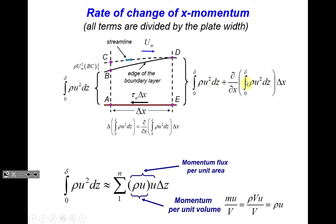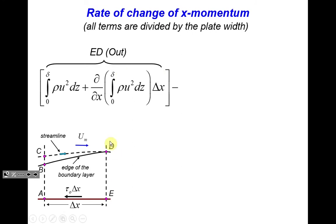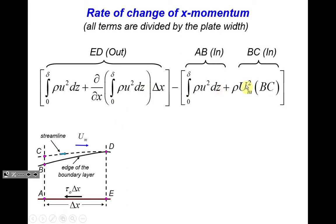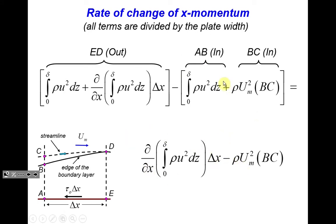Nothing passes through the streamline because velocity across it is zero — it is effectively impenetrable. Through ED, the outgoing momentum flux combines flux through the boundary layer plus the contribution from the external part of the flow through BC. After algebra, this simplifies to an expression containing two terms: one fully defined by boundary layer velocity and external velocity, and one involving BC — which is not directly measurable and must be expressed in terms of measurable quantities.